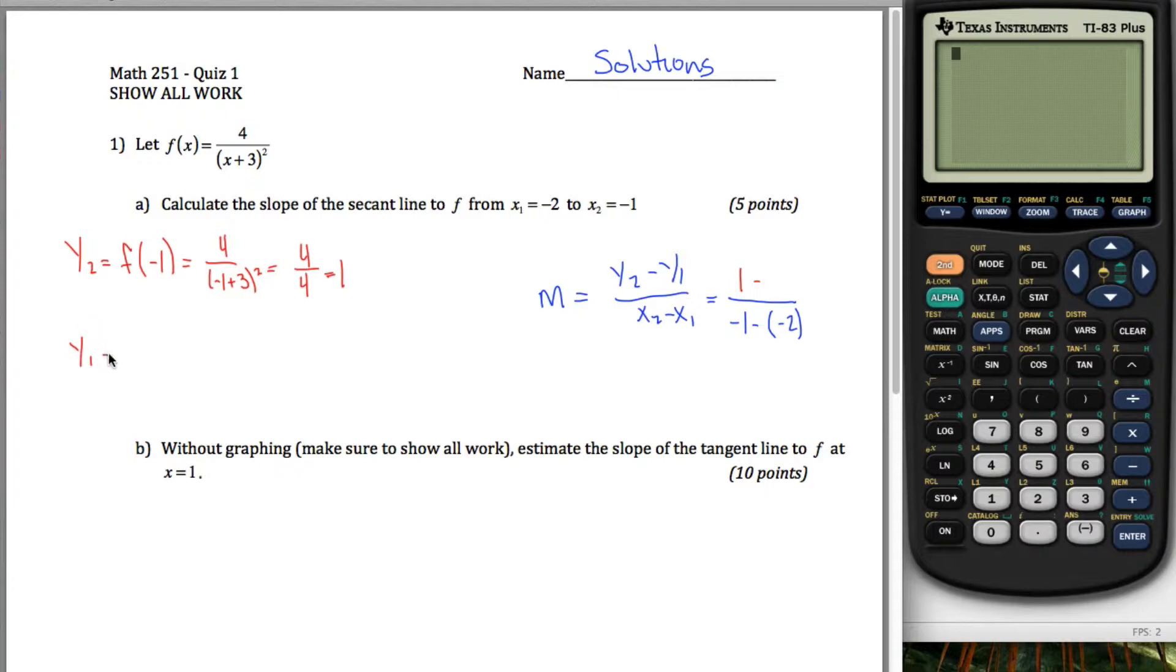But negative 1 plus 3 is just 2 and 2 squared is 4, so it's 4 divided by 4, in other words, it's 1. Similarly, y1 would just be f of x1 and x1 is negative 2, so it's 4 divided by negative 2 plus 3 squared. But negative 2 plus 3 is just positive 1 and positive 1 squared is just 1, so I get a 1 and a 4 here.